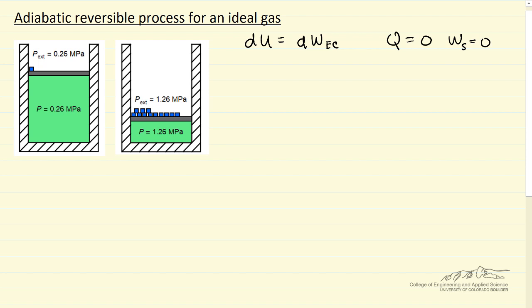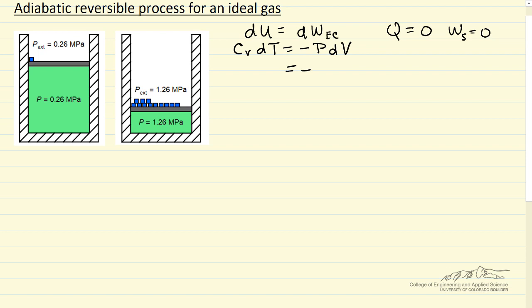Because it's an ideal gas, du is cv dt. Because it's reversible, I can write this differential as pdv. Where p is the pressure of the gas, it's also the external pressure. And then I can make a substitution using the ideal gas law, and I can replace pressure as rt over the volume dv. The left side's not changed.